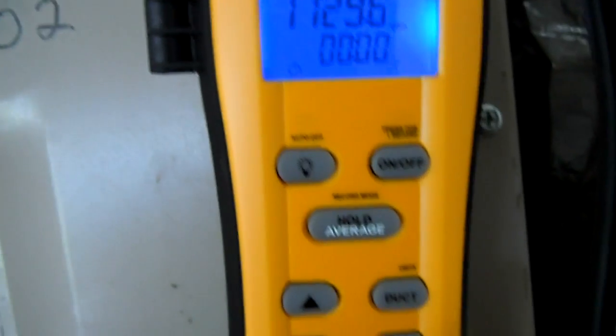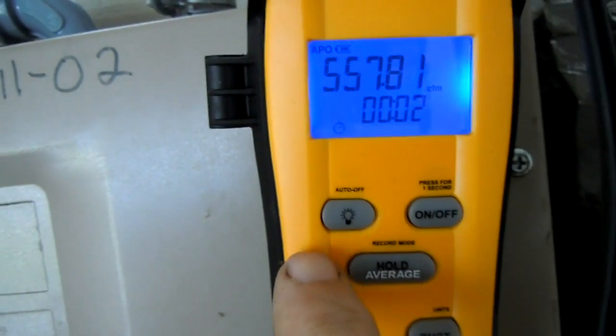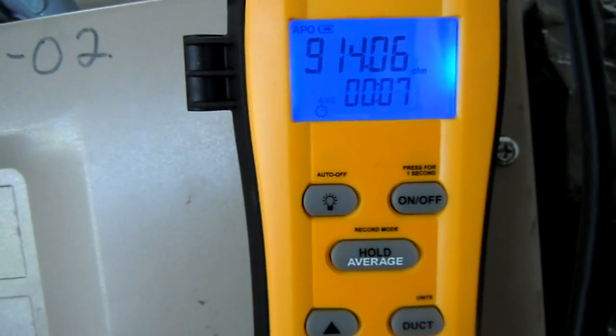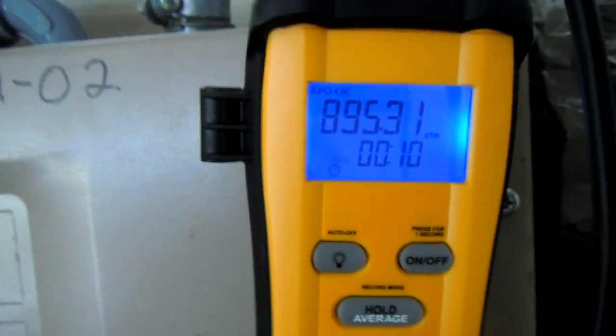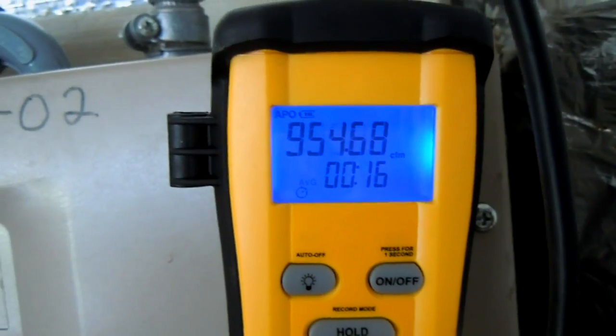I can move my probe to a different location. In this case I'll move it down here to a hole that I made in the return. Now I have to hit the enter button, begin the clock again, and I'll hit the averaging button so I'll begin to average the reading.